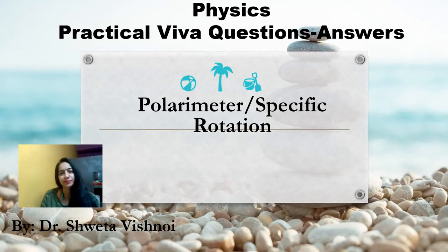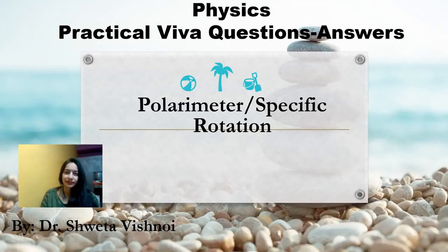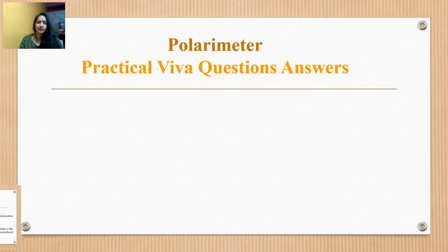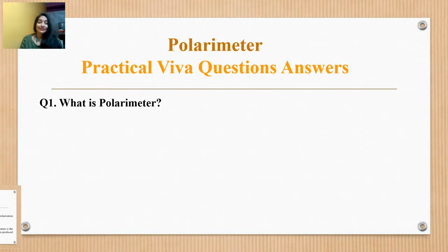Hello everyone, today we are looking at the physics practical question of polarimeter or specific rotation of cane sugar. A polarimeter is a device used to measure the angle of rotation of a plane of polarization rotated by an optically active substance.